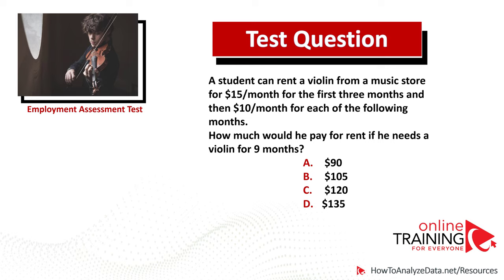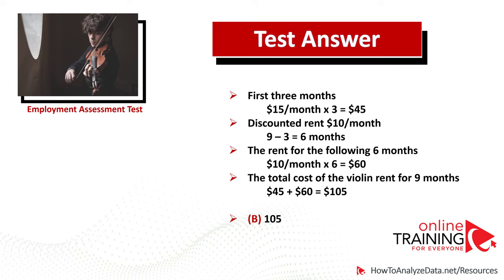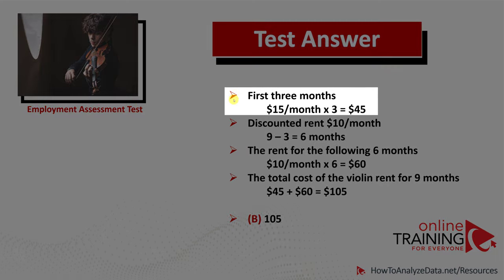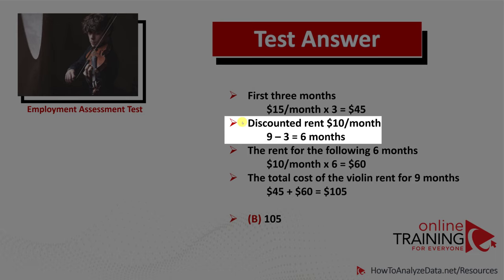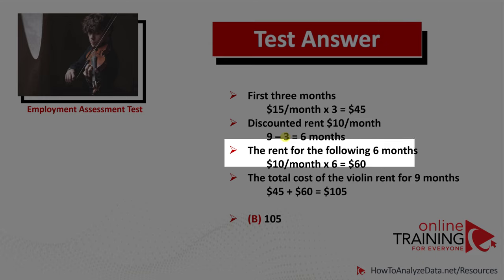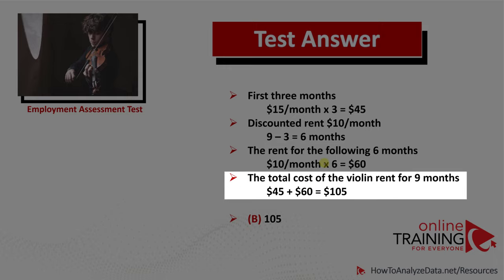Let's see if we can get to the correct solution together. To calculate the correct values, we need to do two separate calculations. First, we calculate the value for the first 3 months: $15 per month multiplied by 3 equals $45. After the first 3 months, the student will have a discounted rent of $10 a month, so the value for the next 6 months is $10 multiplied by 6, which equals $60. The total cost of renting the violin for 9 months is $45 plus $60, which equals $105. So the correct choice is B.